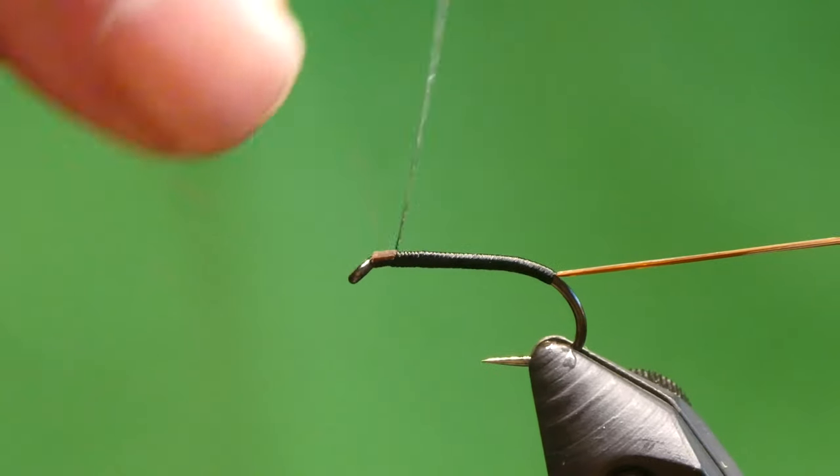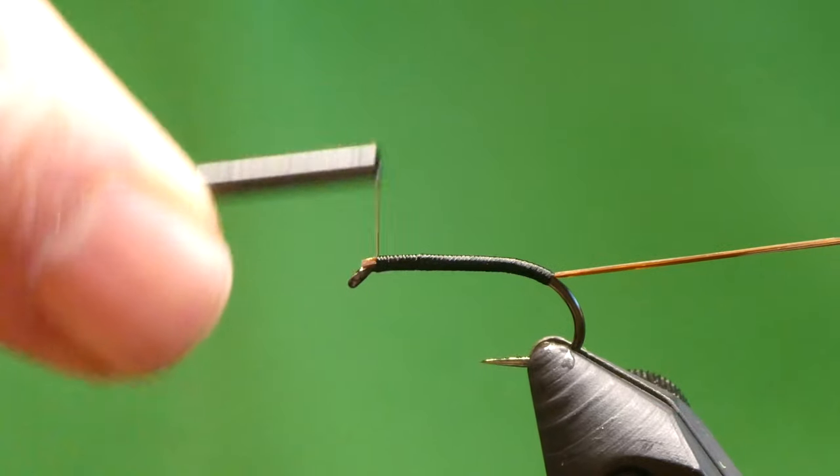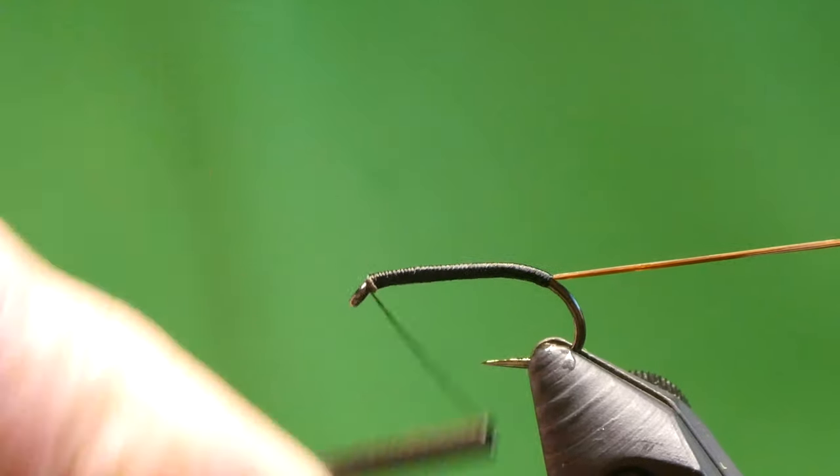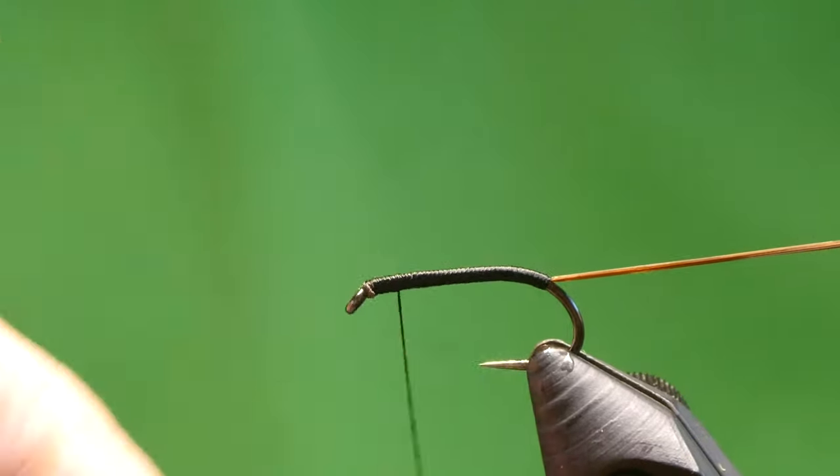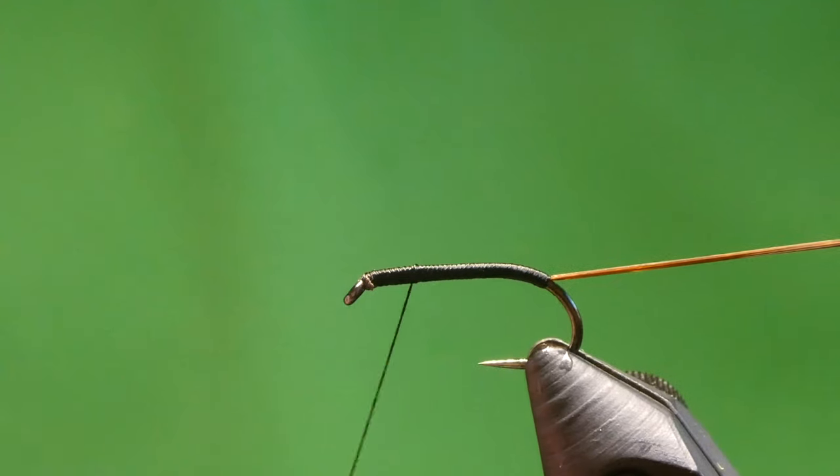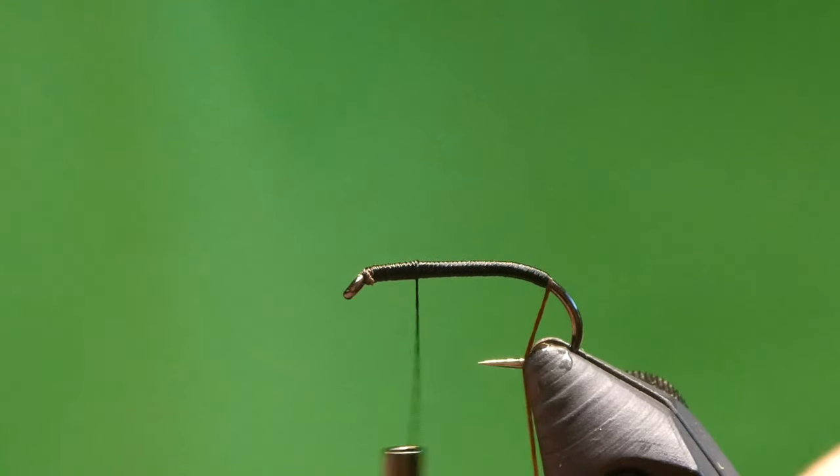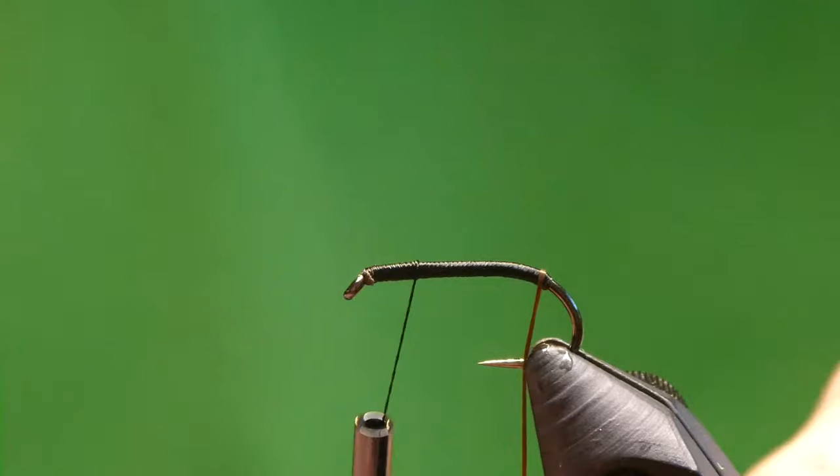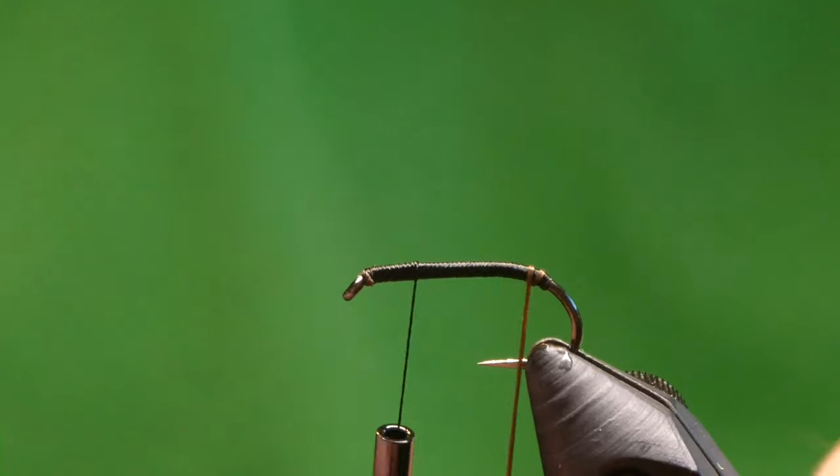Just make sure you tie this bit in at the top, that's it. Bring it back down and ribbon it—do a turn, miss a turn basically, just so you see the black coming through.